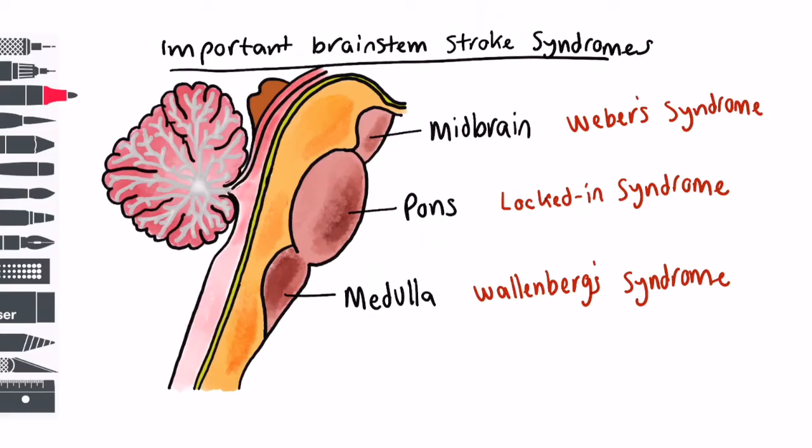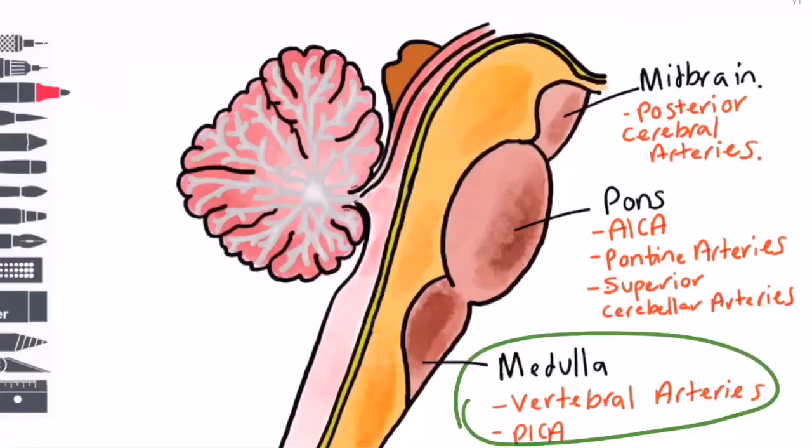Wallenberg syndrome is also called lateral medullary syndrome or PICA syndrome. Given that it affects the medulla, the most likely responsible blood vessels are the vertebral arteries or PICA. This is the commonest of the brainstem strokes.